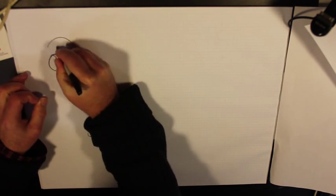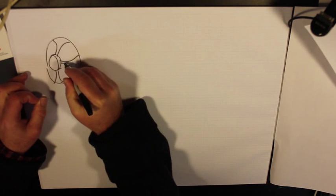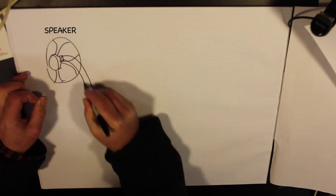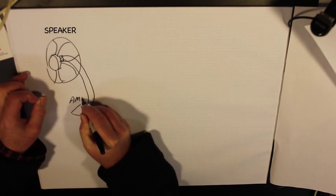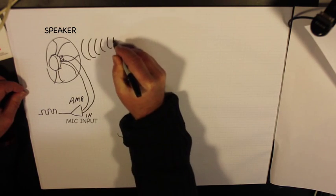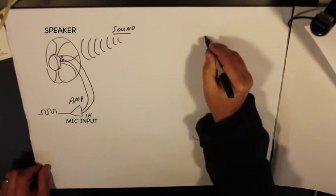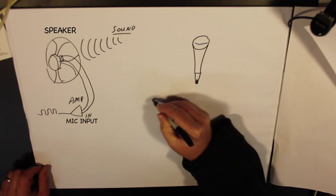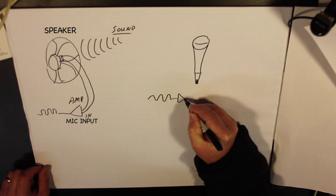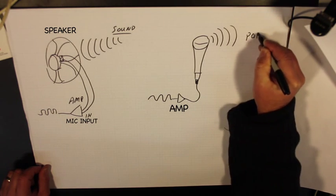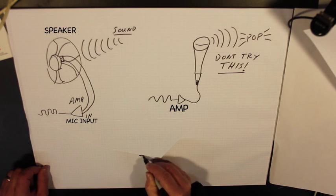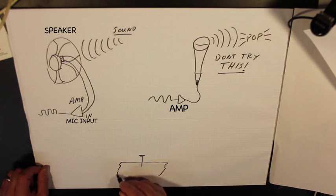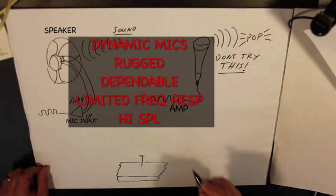Dynamic microphones work in the same manner as speakers, only in reverse. If you connect a speaker to a microphone input, it will pick up the sound. And if you apply audio to a dynamic microphone, it will produce sound — but this is not a good idea, as you will probably blow the coil of the microphone. Overall, dynamic microphones are rugged and dependable. They don't require power and can take a lot of abuse and keep on working.